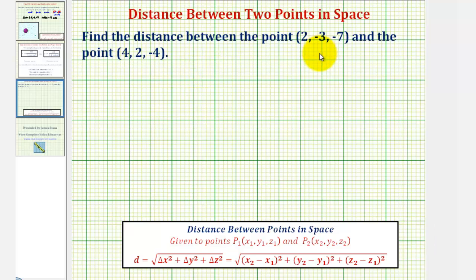We want to find the distance between two points in space, where the first point is (2, -3, -7) and the second point is (4, 2, -4).